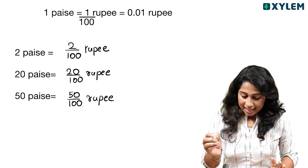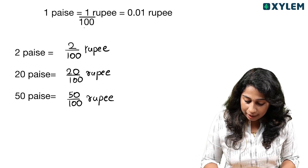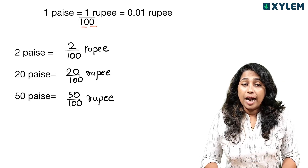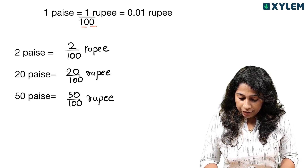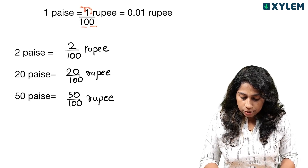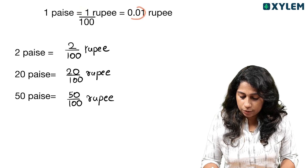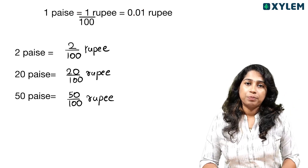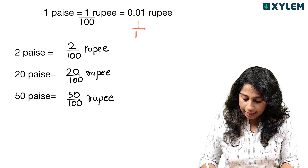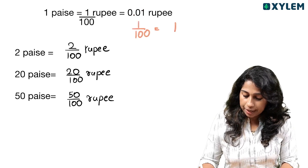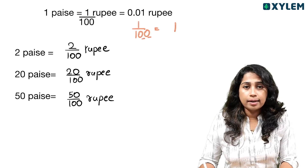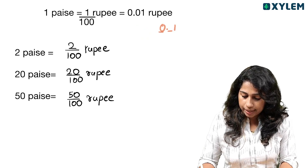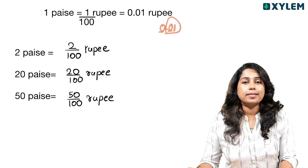Easy. Here we go: 1 divided by 100. 100 has 2 zeros. We are going to move 2 decimal places. So 0.01 is 1 by 100. 2 zeros — move 2 zeros. So it is 0.01. This is the answer.